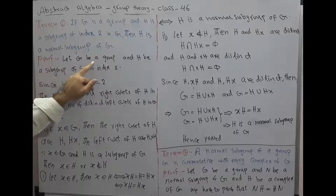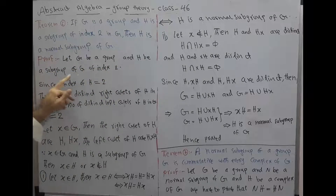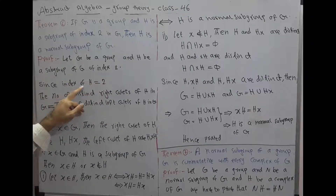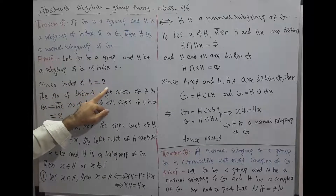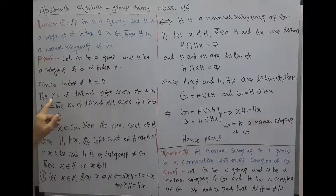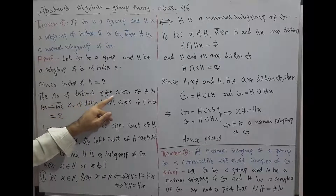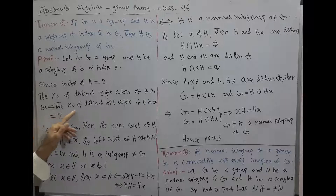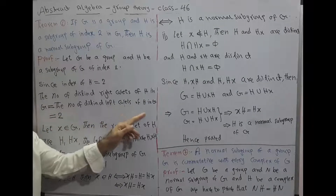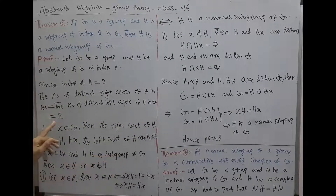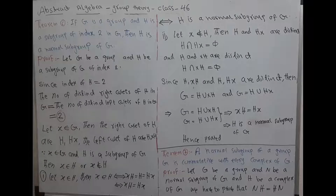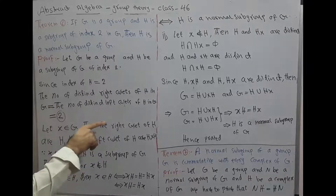Proof. Let G be a group and H be a subgroup of G of index 2. Since the index of H equals 2, the number of distinct right cosets of H in G equals the number of distinct left cosets of H in G, and it is equal to 2.